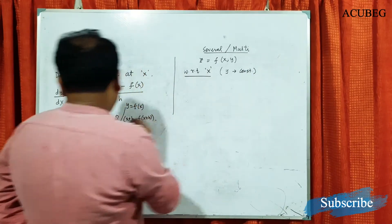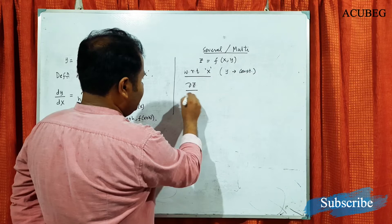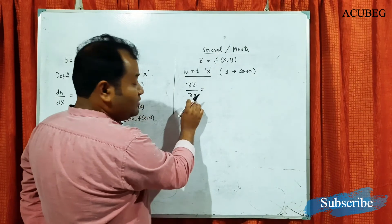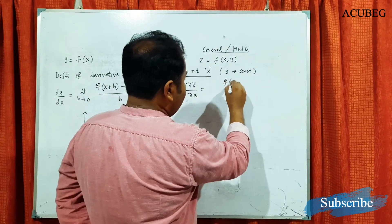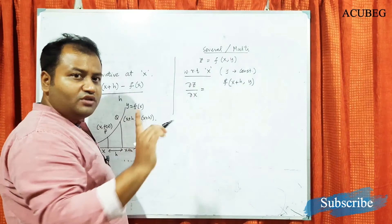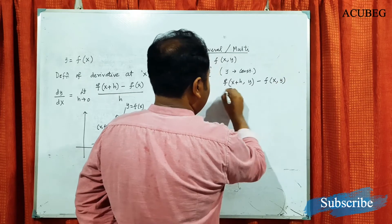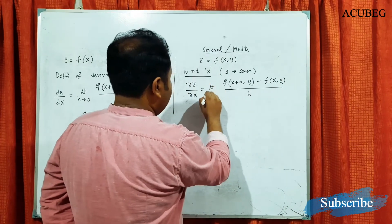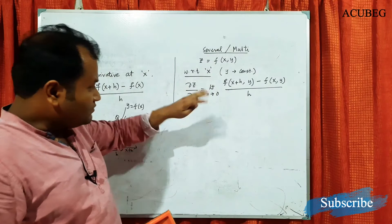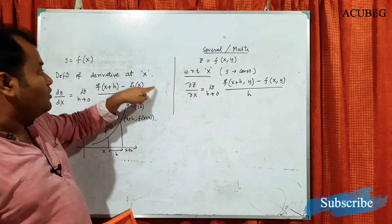The derivative looks a little different here. For single variable it is called dy/dx; here it will be called del z / del x. That equals, in the limit as h tends to 0: f(x+h, y) minus f(x, y) divided by h — because x is changing to x+h while y stays the same, since y is a constant. It is essentially the same formula, just with y held fixed.